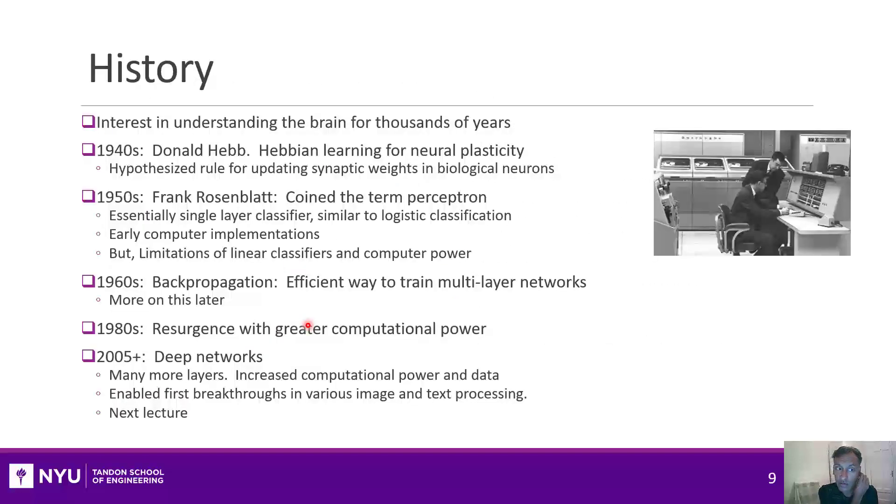There's a long history of neural networks. Trying to understand the brain has been one of the problems of humankind for thousands of years, but the neural networks that are relevant, the developments that are relevant for this unit, started at least back in the 1940s with Donald Hebb, who really tried to start to understand what's called neural plasticity, which in the context of machine learning will be the way that these weights of these neural networks adapt to data. In the 1950s, Frank Rosenblatt coined the term perceptron, which can be really considered like a one-layer neural network. It's actually really just a logistic classifier, but it couldn't really progress beyond that because there were limitations in computational power.